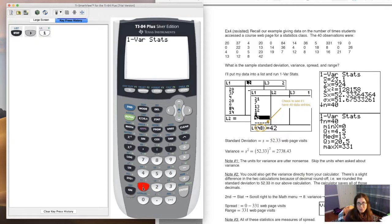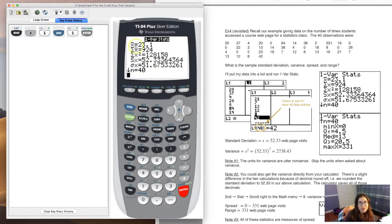So let's feed your calculator L1, hit enter, and here we are again. We have our sample mean, the summation of all the values of our variable, the summation of all the squares of the values of our variable, and here's sx. So 52.334. You have sx and sigma, the sample standard deviation and the population standard deviation.